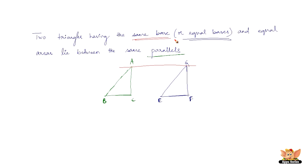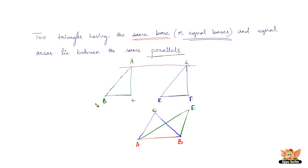Now let us consider the same base and see what it means. Say we have a base AB and two triangles on top of it with equal areas: triangle ABC and triangle EBA. Since both triangles lie on the same base and have equal areas, it means they lie between two parallel lines — so lines AB and CE are parallel to each other. This concludes the properties of triangles when they are on the same base and when they lie between two parallel lines.